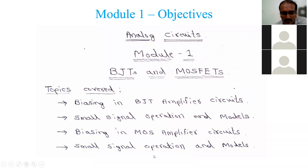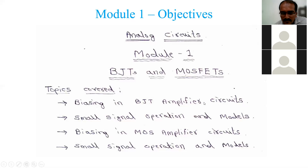This introduction is sufficient for today. The next class will start the first part: biasing in BJT amplifier circuits. It may take around 10 hours to complete this topic in online mode, as per the timetable. Saturday at 9:30 there is a period, which will be taken from home. Please be ready for the class tomorrow.